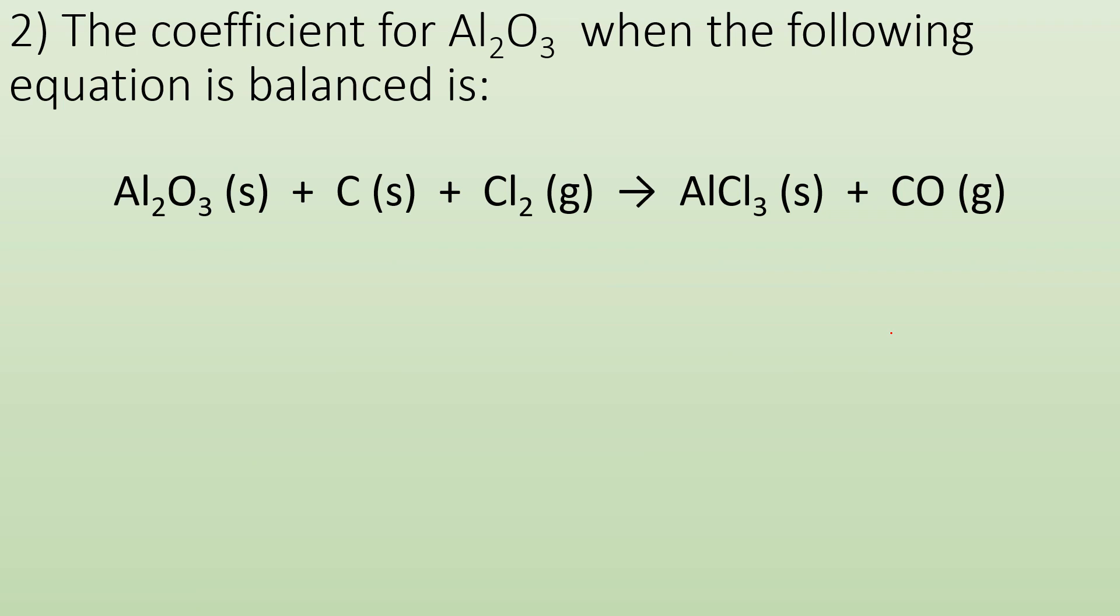Another one. The coefficient for aluminum oxide when the following equation is balanced. Blank. All right. So again, same process. Take your inventory. I have aluminums. I have oxygen. I have carbon. And I have chlorine. I'm going to write it in the same order on the other side. All right. Well, now count how many of each. I got two aluminum. I have three oxygen, one carbon, and two chlorine. On this side, I have one aluminum. I have three chlorine. I have one carbon and one oxygen.